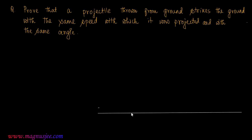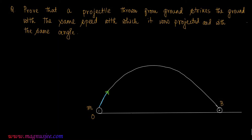This is the horizontal direction or this is the ground. A projectile of mass M is thrown from point O and describes a parabolic path, striking the ground at point B again. U is the initial velocity of projection at an angle theta with the ground, and the projectile strikes the ground at point B with final velocity V prime. At the initial point, T is equal to 0, and at the final point B, t equals capital T.